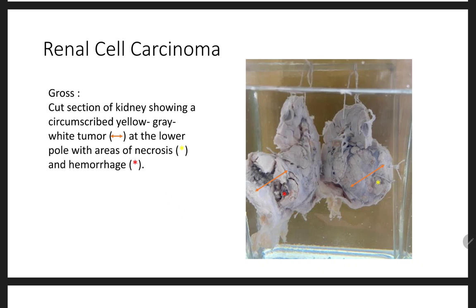The circumscribed yellow-gray-white tumor is located at the lower pole, with areas of necrosis marked by the yellow star. Hemorrhagic areas are also present. So three key features are present in renal cell carcinoma: a yellow-gray-white tumor, hemorrhage, and necrosis.